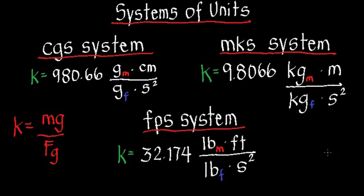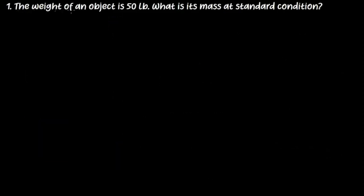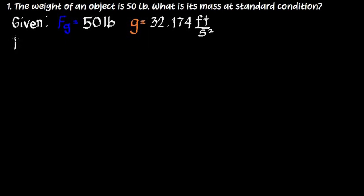Now let's solve some problems involving mass and weight. Number 1: the weight of an object is 50 pounds. What is its mass at standard condition? Let's write the given first. Fg equals 50 pounds. And at standard condition, g equals 32.174 feet per second squared, since we are using the FPS or foot pound second system of units. We are required to find the mass at standard condition, which is m.